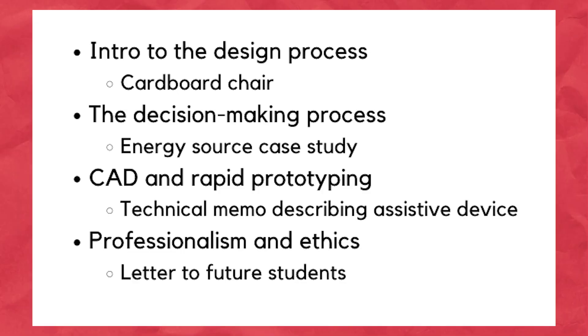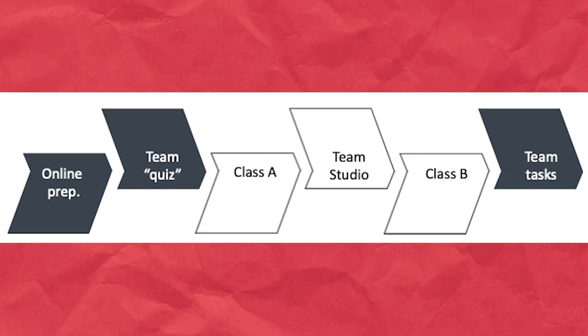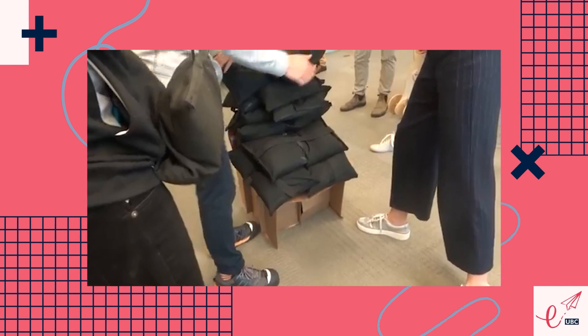First off, we have AppSci 100, your engineering design course that teaches you how to think like an engineer and what it means to be an engineer. It's divided into four modules, each with a team deliverable or project at the end, and you'll be assigned to a team at the beginning and go through the entire term with them. You'll have a lot of individual prep, team quizzes, and group work every week, so focus on the way of thinking rather than memorizing. You'll also get the chance to work on the cardboard chair project, which we have a longer video about on our channel.